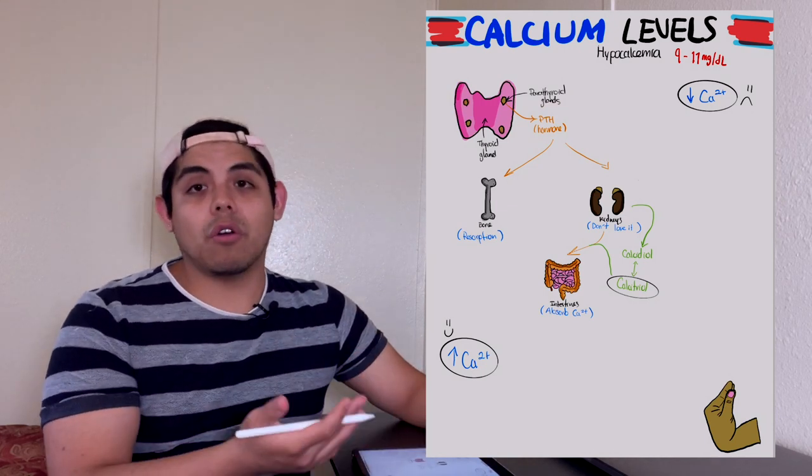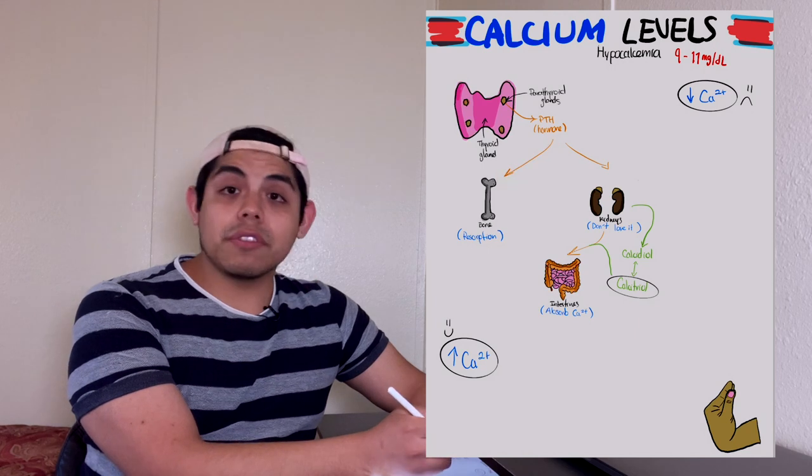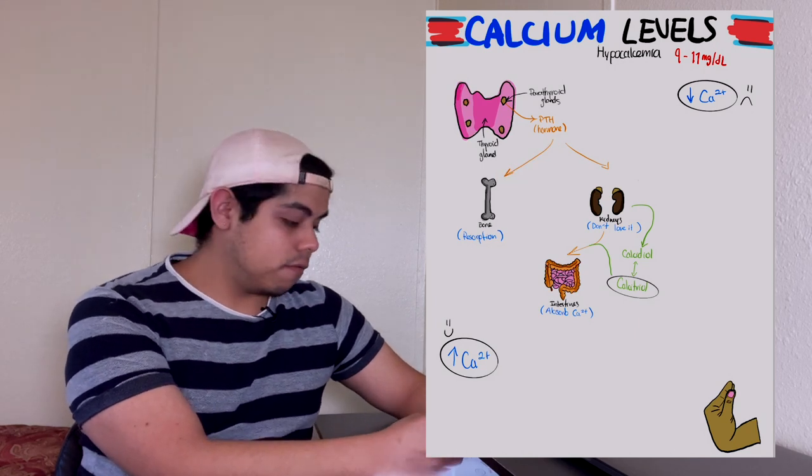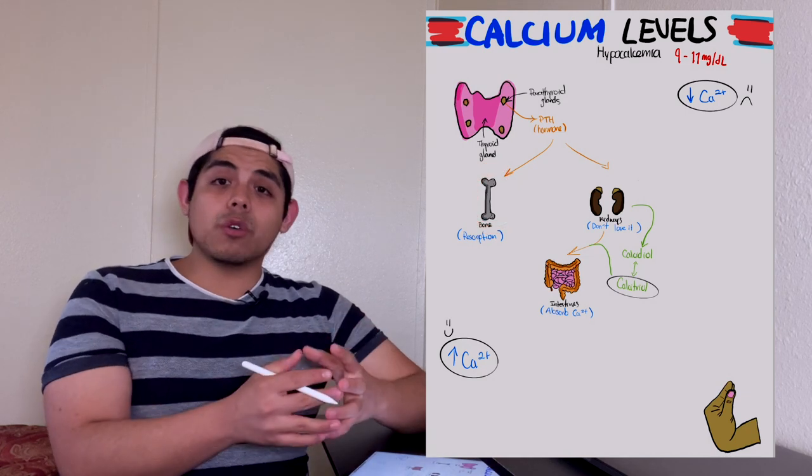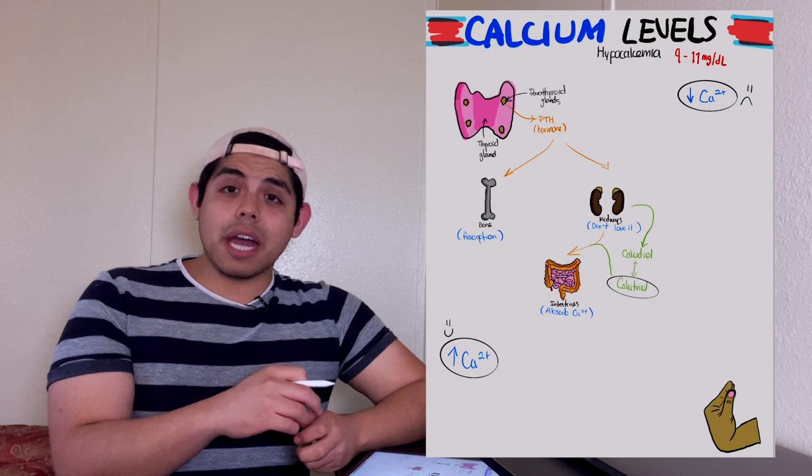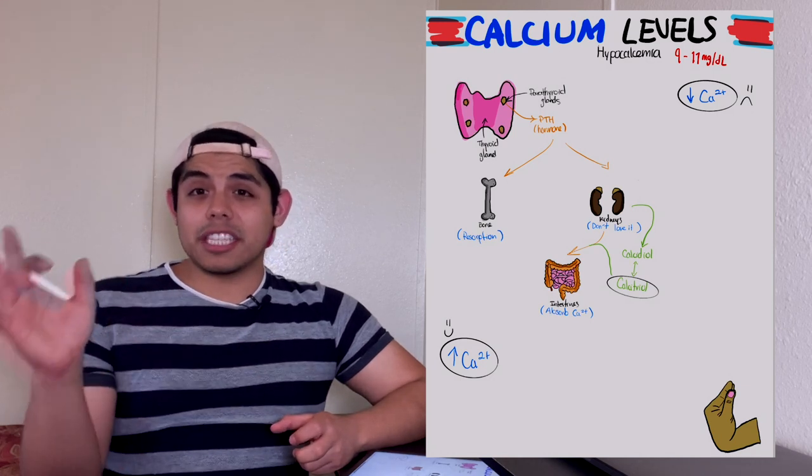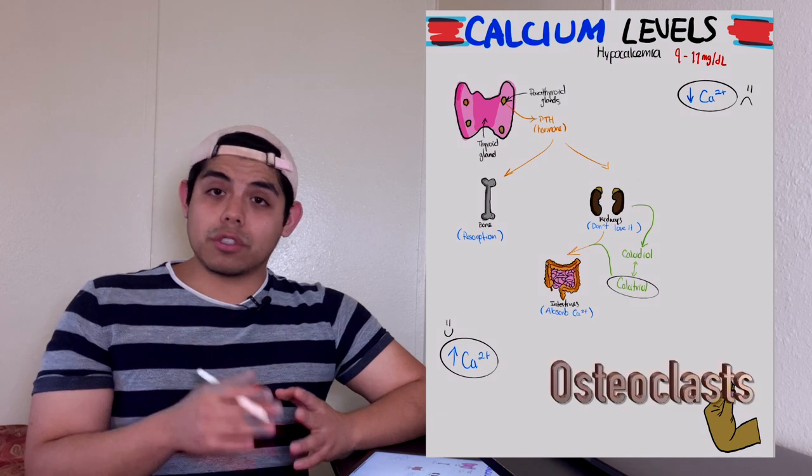PTH is going to target two different types of organs. It will cause bone resorption, and what that means is it's going to break the bone to take some of the calcium out of it and put it out in the blood. The type of cell that is going to do this are called osteoclasts.